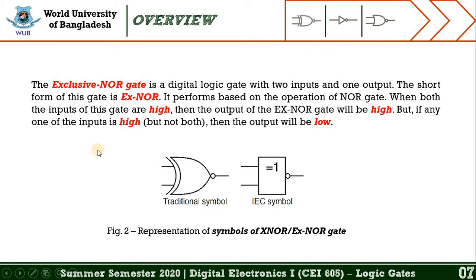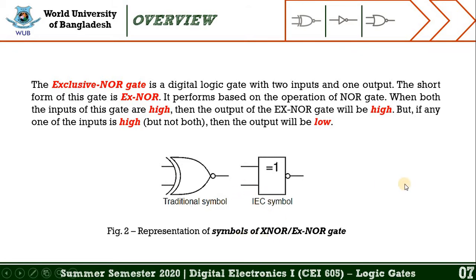This slide represents an overview of the XNOR gate. The exclusive NOR gate is a digital logic gate with two inputs and one output. The short form of this gate is XNOR. It performs based on the operation of the NOR gate. When both inputs of this gate are high, then the output of the XNOR gate will be high — which means one. But if any one of the inputs is high but not both, then the output will be low. Figure 2 represents the symbol of the XNOR gate, and there are two symbols: one traditional and one IEC symbol.